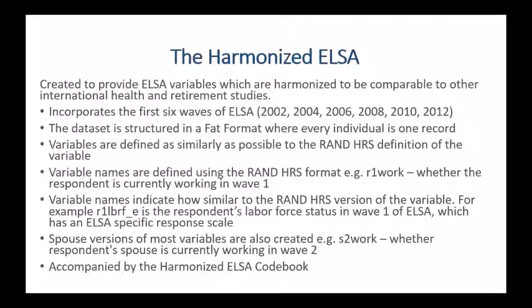We also include spouse versions of most variables. For example, S2WORK is whether the respondent's spouse is currently working in wave 2. These are really helpful if you're interested in looking at family effects — it saves researchers time when identifying households where both people are working, one person is working, or no people are currently working. The harmonized ELSA, as well as all harmonized datasets, are accompanied by a codebook which includes documentation for exactly how these datasets were created, how each variable was derived, differences that might have happened between different waves of ELSA, and how each variable differs from the variable in the RAND HRS.